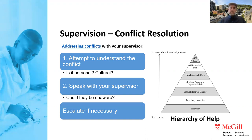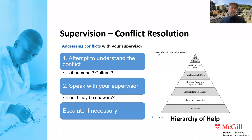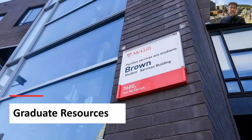A note on conflict resolution: conflicts can sometimes occur even when expectations are clearly laid out. Best practice is to first attempt to understand the conflict — is it a clash of personalities, different academic or social cultures, or perhaps your supervisor isn't aware of the issue? Reach out and talk to them. If needed, escalate using the hierarchy of help shown on this slide: from your supervisory committee to your Graduate Program Director, all the way up to the Dean of Graduate and Postdoctoral Studies.